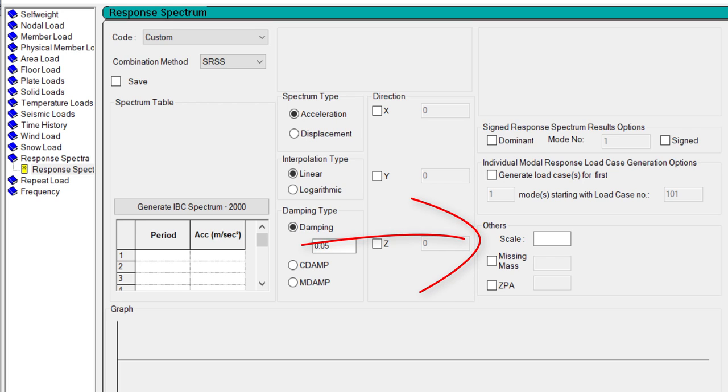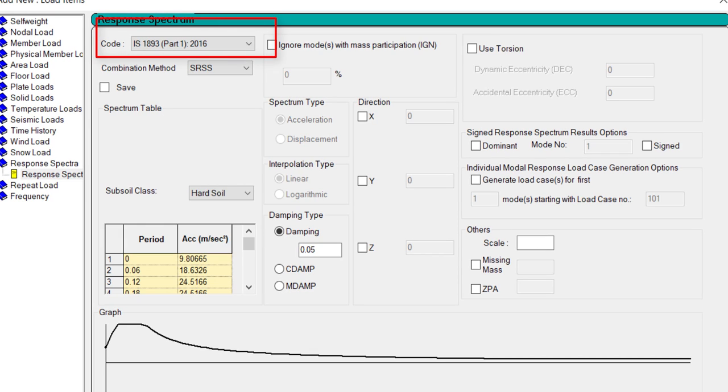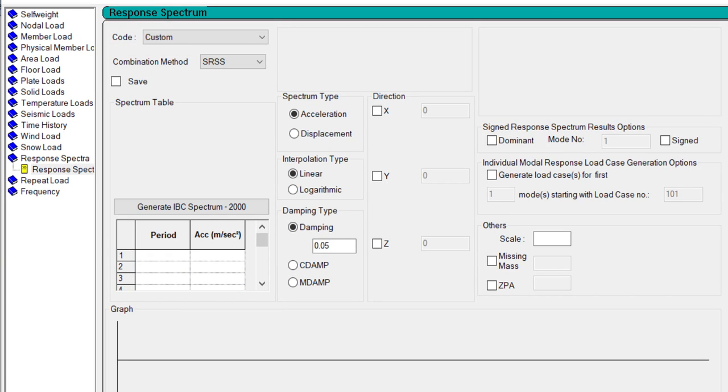If we open the response spectrum input parameter in STAAD Pro dialog box, we can see different options to define the overall response spectrum parameters, and you can define the response spectrum data. One can feed the custom response spectrum data or select any code to generate the response spectrum data by the codal procedure.